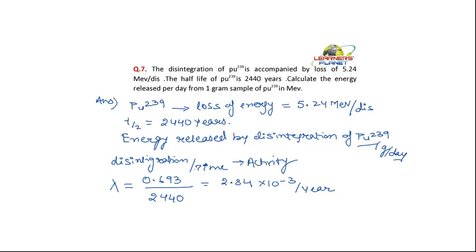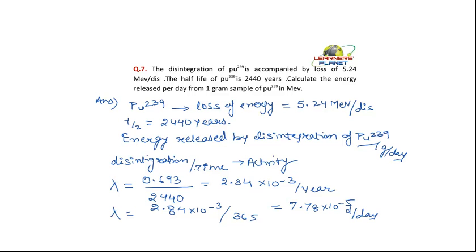To find it per day: there are 365 days in one year, so divide by 365. That gives 2.84 × 10⁻³ divided by 365, which equals 7.78 × 10⁻⁵ disintegrations per day. So the radioactive decay constant of this plutonium is 7.78 × 10⁻⁵ per day.